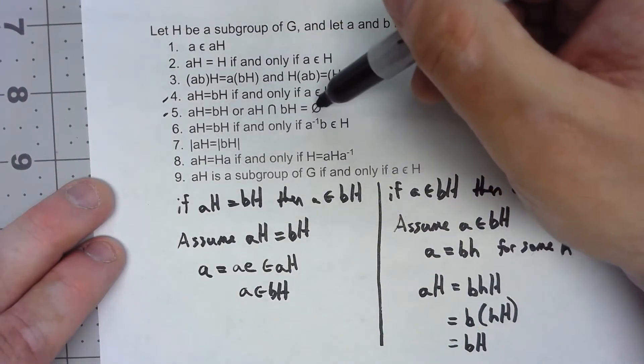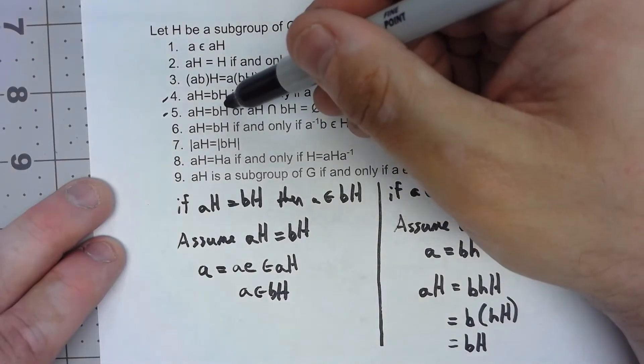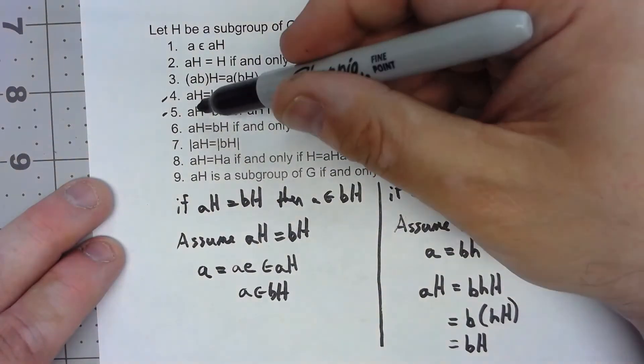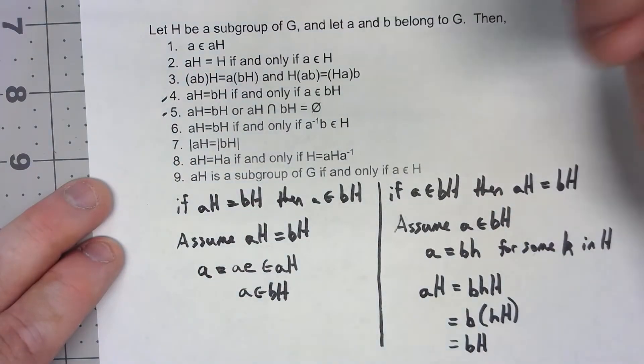So if their intersection is not empty, then they have to be the same coset. That's another way of just saying that either they're the same coset or their intersection is empty.